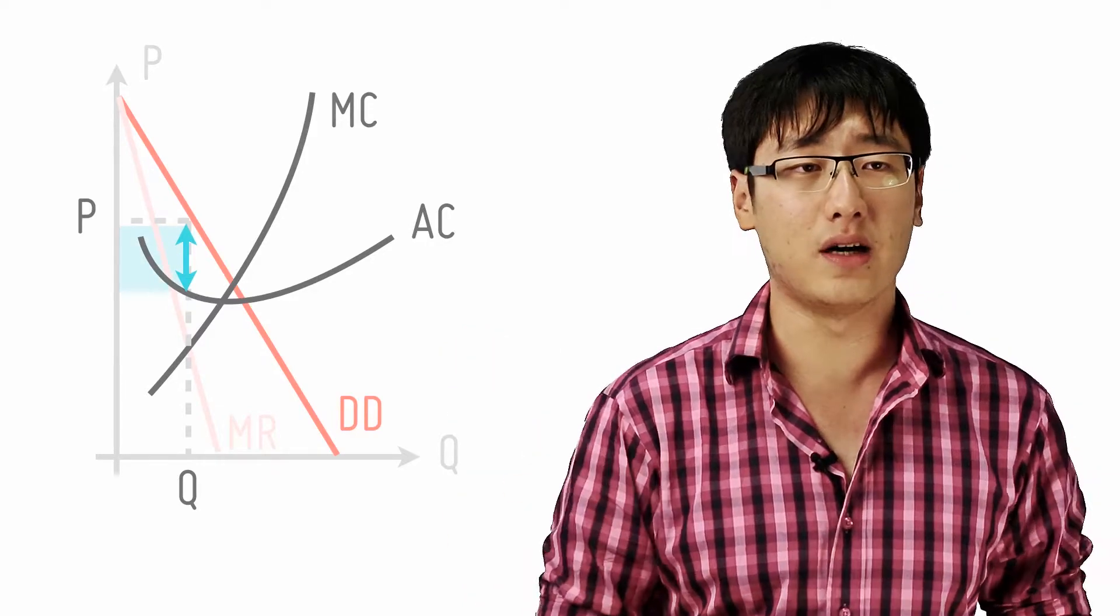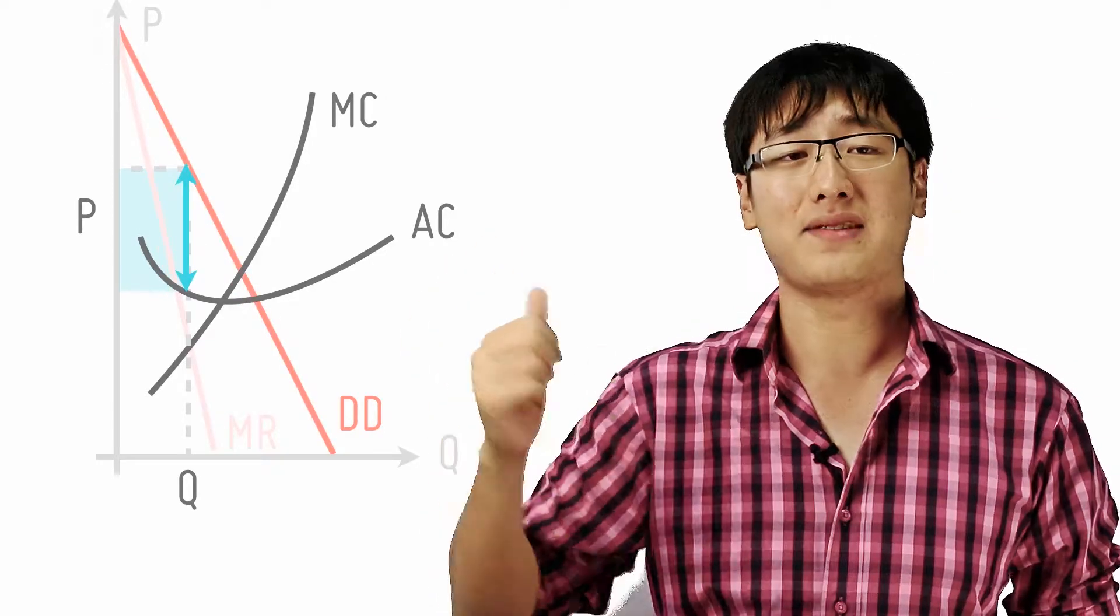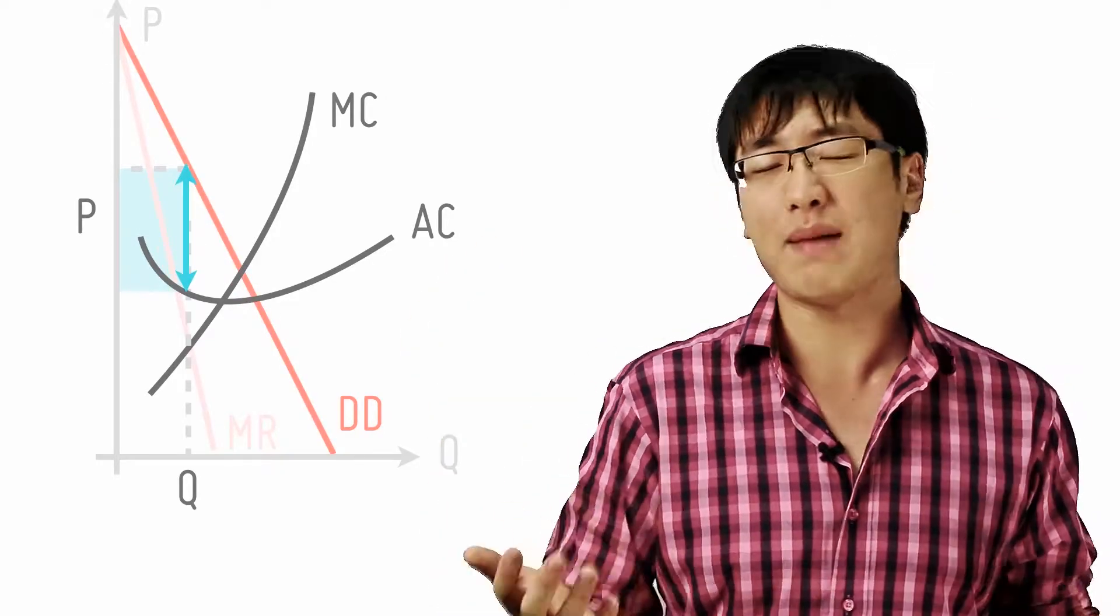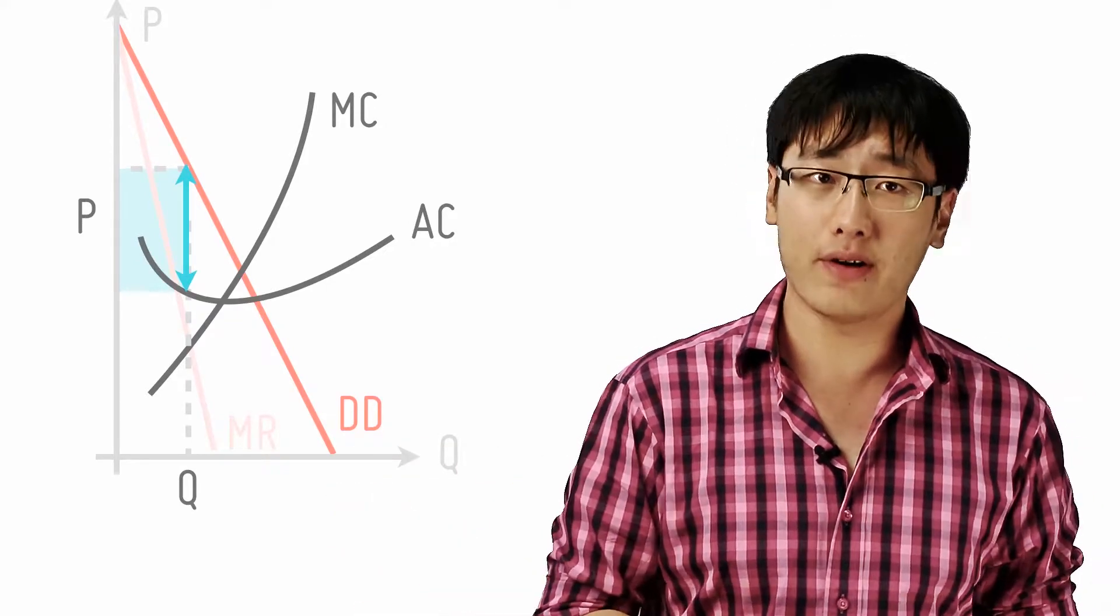These profits tend to be large when the curve is more inelastic. Let me show you. So here we have a monopoly with a more inelastic demand curve. And you can see that the gap between the MR and the AR is larger. The firm actually earns a higher profit.